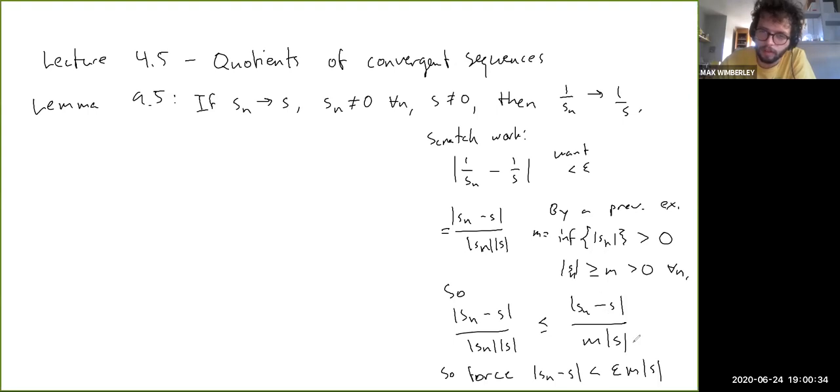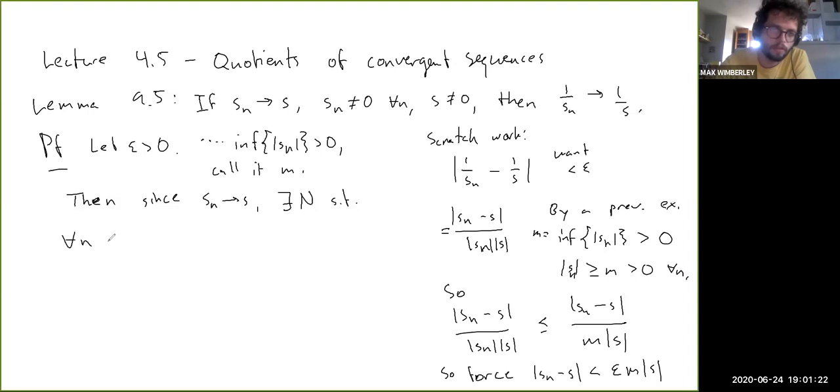So we can force |Sn - S| to be less than epsilon MS, just a constant. And that will force this quantity to be less than epsilon, which will then in turn force this quantity to be less than epsilon, which is what we want. So the proof here is: let epsilon be greater than zero. Then, by a previous example, the infimum of the absolute values of Sn is greater than zero. So call it M.